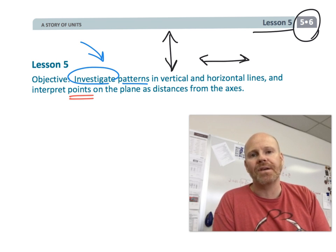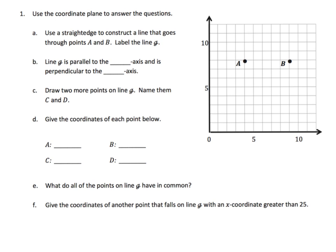The directions say to use a straight edge to construct a line that goes through points A and B. I'm on a computer so I'll do my best to create a straight line through A and B. We label it G — tradition has us use cursive — and line G is parallel to the x-axis and perpendicular to the y-axis, because perpendicular means the two lines form a right angle.